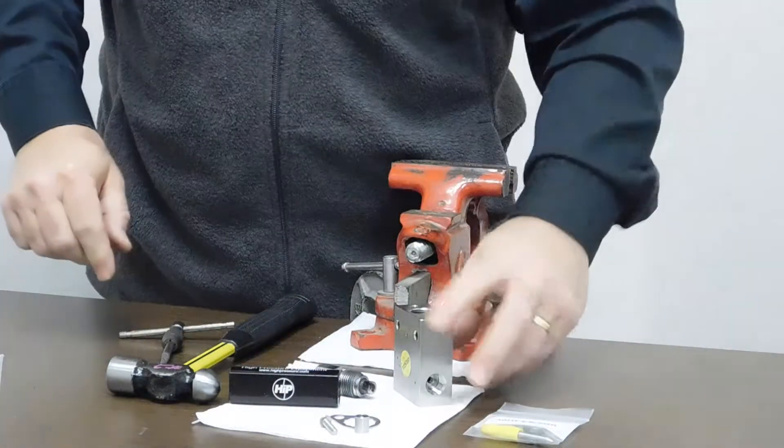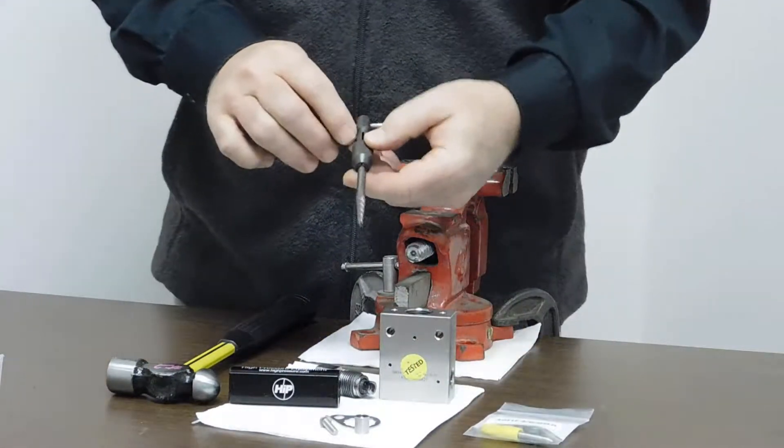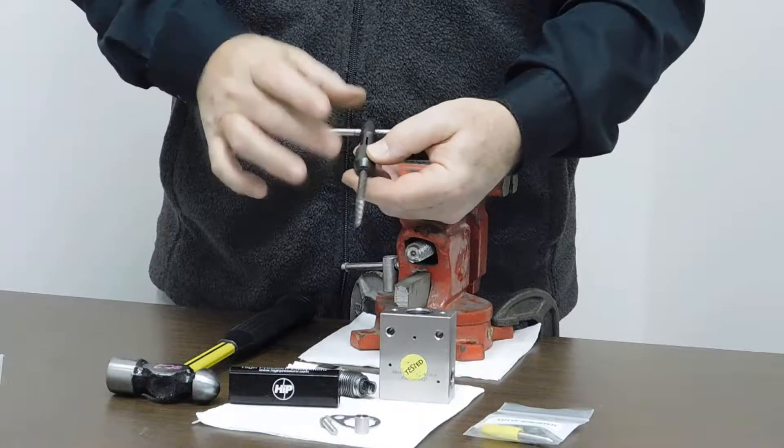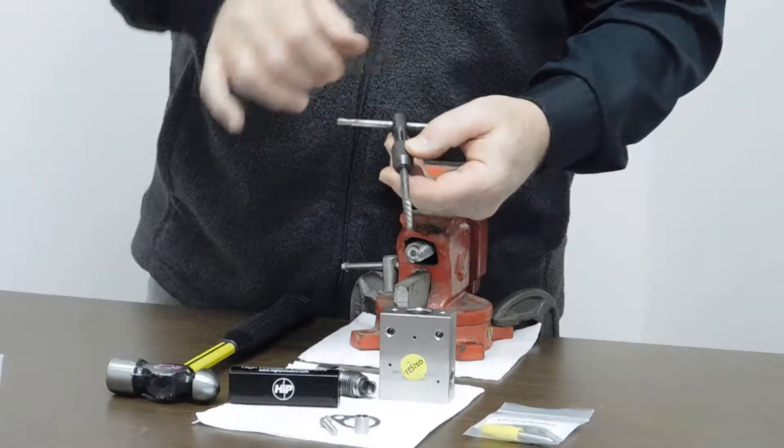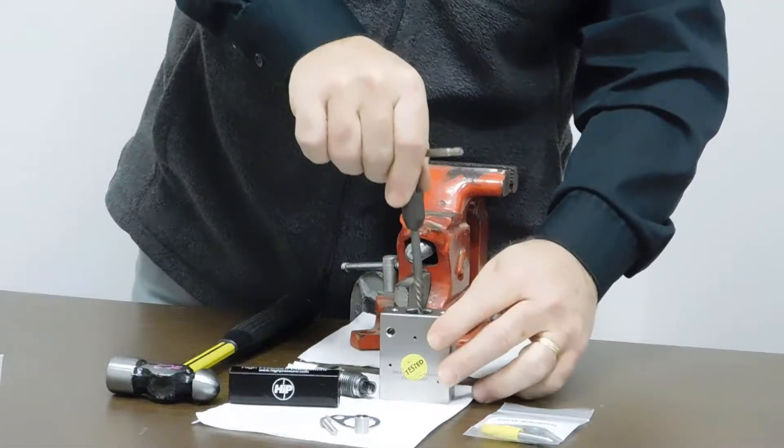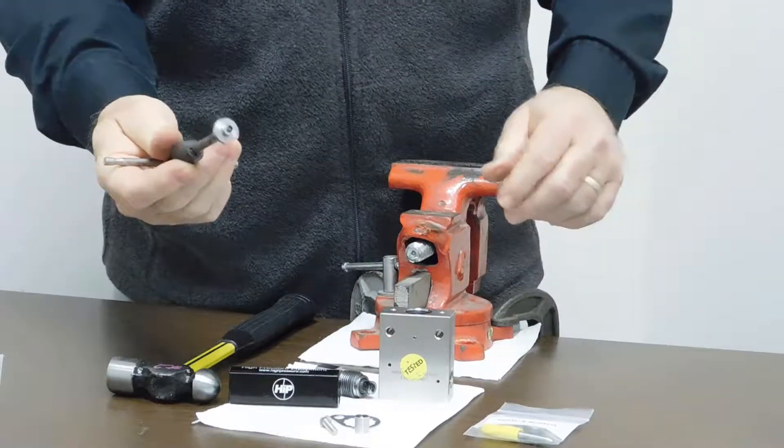Our next step now is to remove the washers that are down inside the valve block. I've got a screw extractor that I purchased at a local hardware store and mounted it into a T-handle. So all we've got to do is put the screw extractor down inside and the first thing we're going to pull out is the top washer. The top washer is now out of the body.